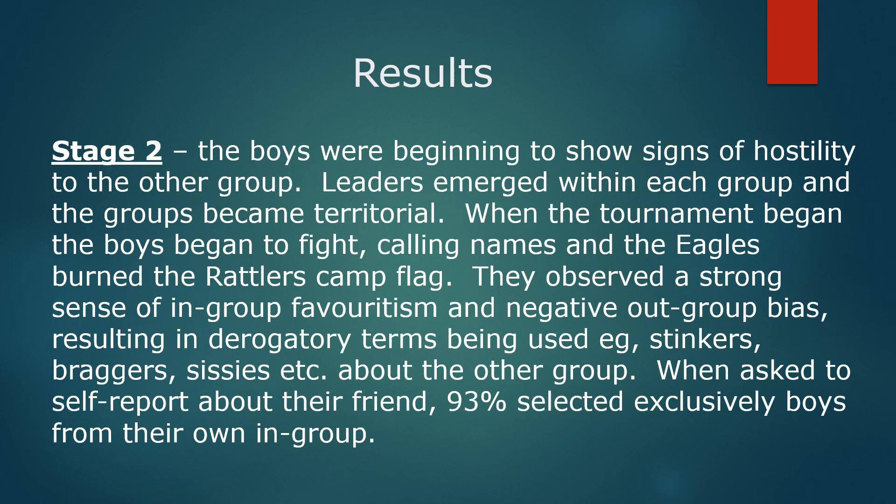When they reached stage two, when inter-group conflict was triggered, the boys began to show signs of hostility towards the other group. Leaders emerged within each group, and the groups became quite territorial over their own spaces and sleeping quarters. When the tournaments began, the boys began fighting, calling each other names, and the Eagles burnt the Rattlers' camp flag. The observers saw a strong sense of in-group favouritism and very strong negative out-group bias, resulting in derogatory terms being used about the other group. When asked to self-report about their friends and the strongest, most athletic people, 93% of the boys selected exclusively boys from their own in-group.